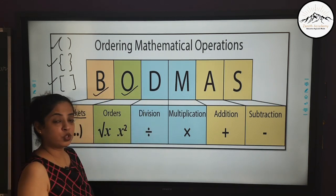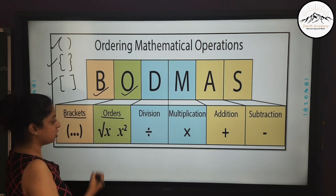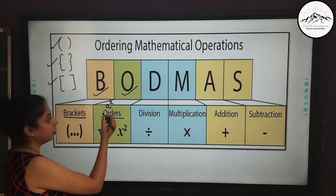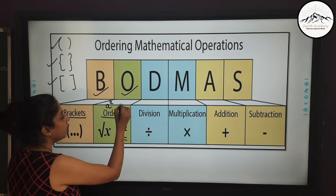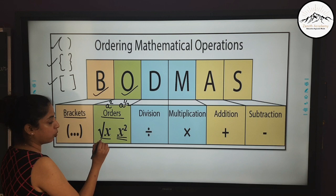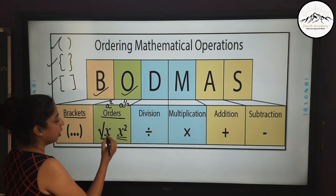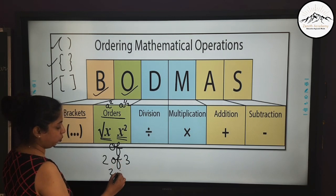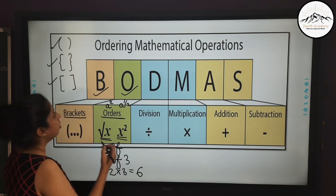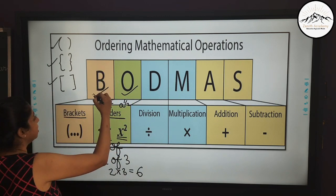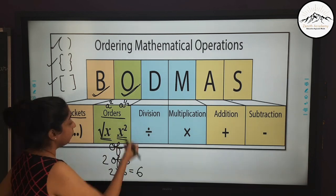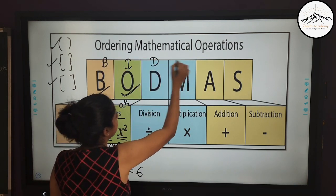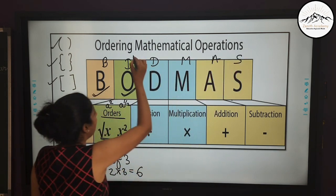O refers to two things. The first is Orders — meaning a number raised to a power. For example, x squared means x raised to the power 2. If it is raised to power half, we call it square root. Whenever there is a square or square root, that is Orders. O also implies 'of' — if I say 2 of 3, it means 2 into 3 which is equal to 6. In many boards this O is also known as I, so people call it BIDMAS, where I refers to Index.